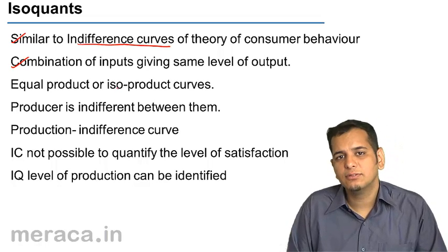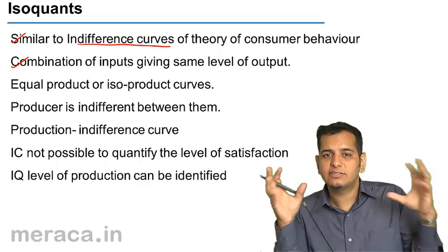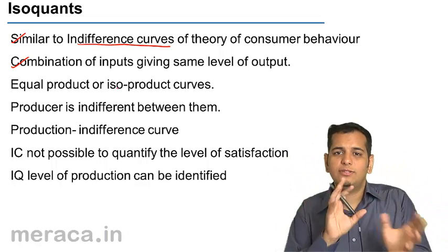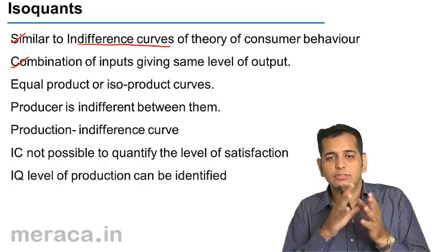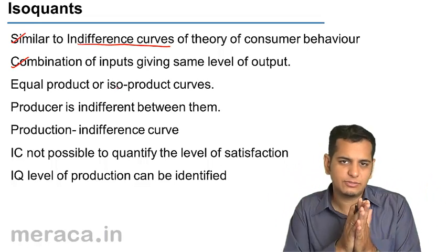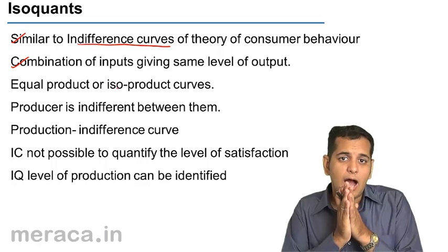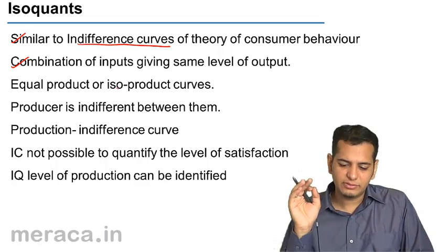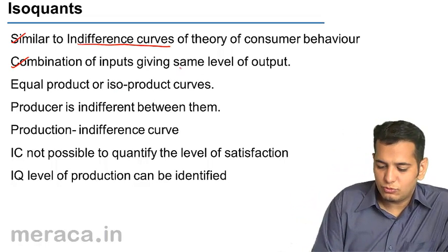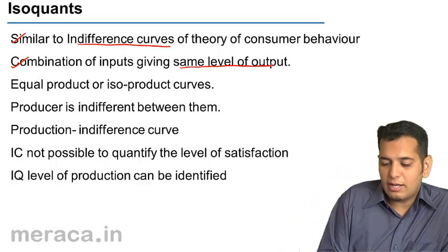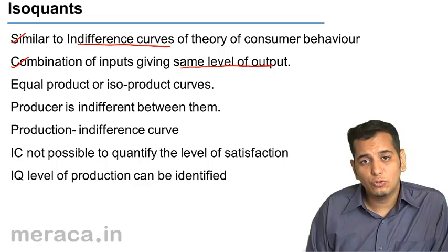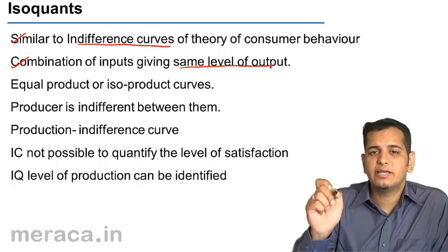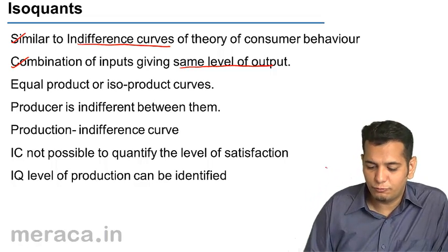We've seen the schedule, where we change the factors of production — the amount of both factors is changed. So at each level, we get a different combination of factors of production. However, at each combination, the output remains the same. So an isoquant curve, though it gives different combinations of input, will always give the same level of output.